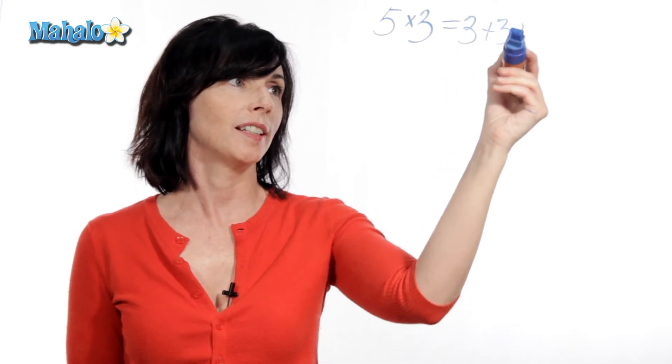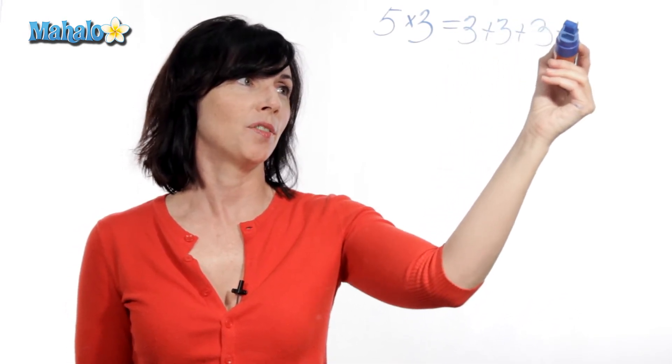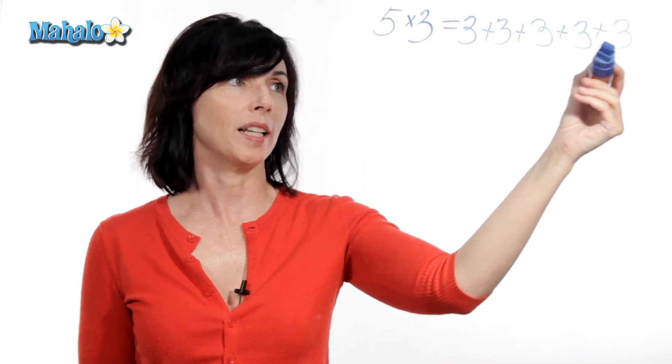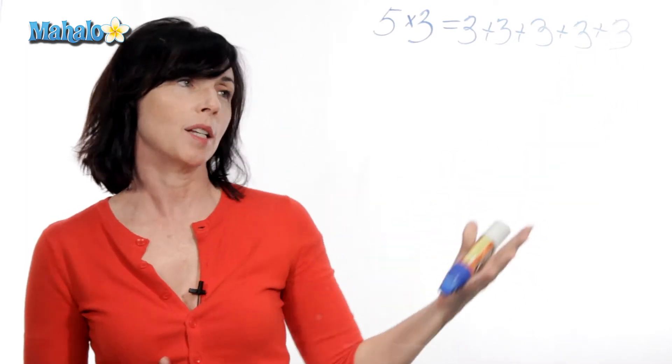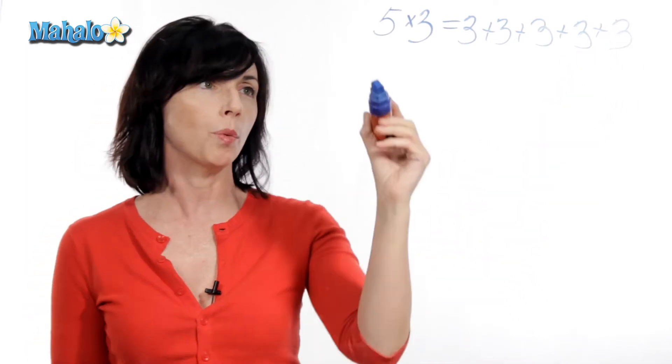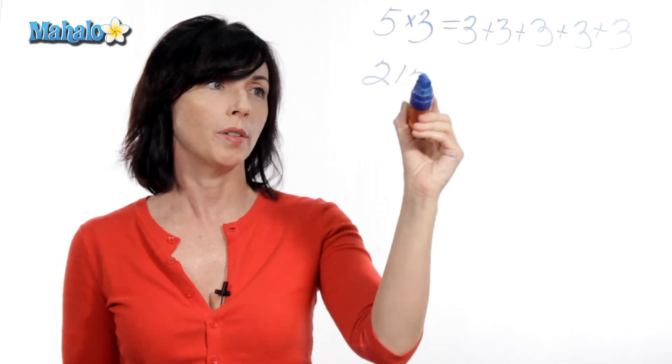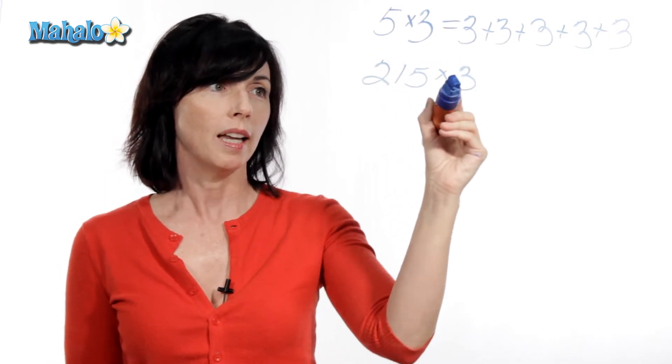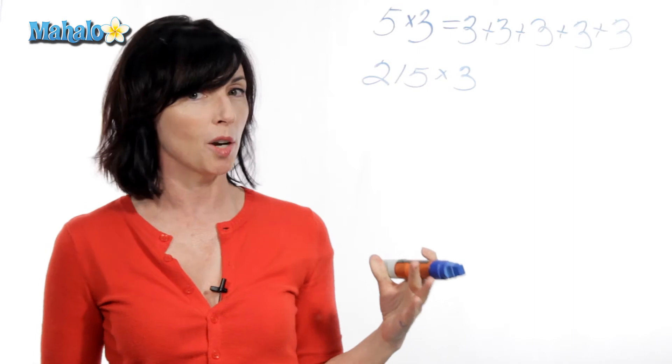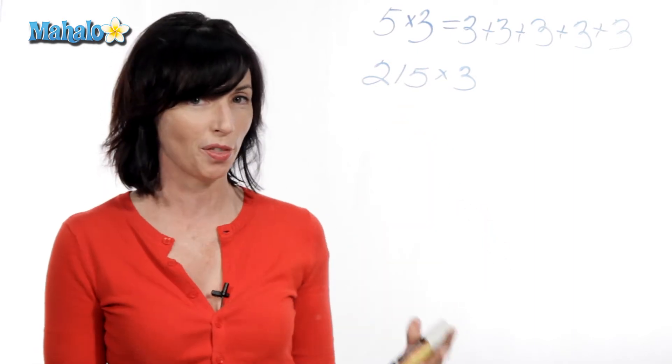One, two, three, four, five threes. Now, that doesn't seem too complicated, but this gets a lot worse if you have something like 215 times three. You're gonna take a lot of time and a lot of paper writing out 215 threes.